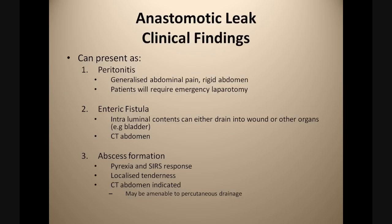Patients with anastomotic leaks can present in one of three ways. They may present with a peritonitic picture with generalised abdominal pain and a rigid abdomen on examination — these patients will often require an emergency laparotomy so emergency theatres need to be contacted immediately. They may present with an enteric fistula where intraluminal contents drain into wounds or other organs such as the bladder, and fistulograms or CT abdomen can be useful for surgical planning. Some patients may form a localised collection in the form of an abscess, complaining of pyrexia and demonstrating a systemic inflammatory response, with local tenderness at the site. CT abdomen is a useful investigation and may indicate whether the abscess is amenable to percutaneous radiologically guided drainage.